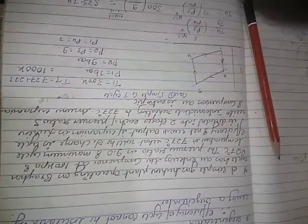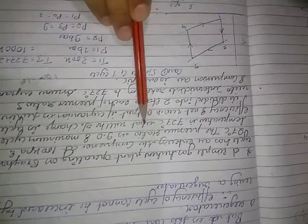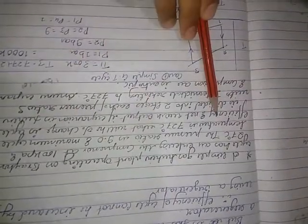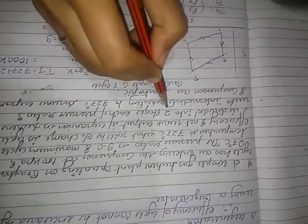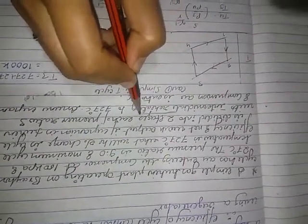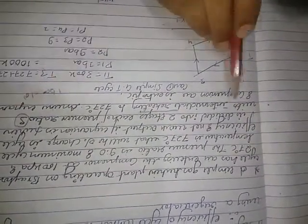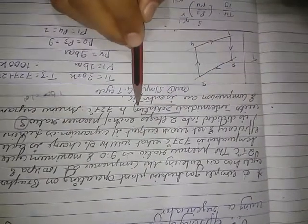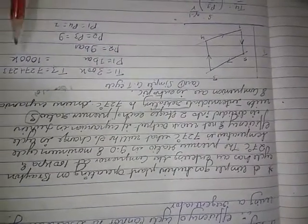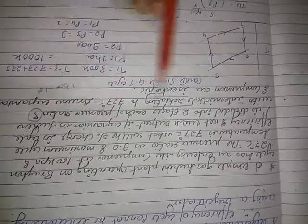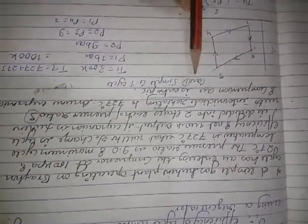There are two cases in this question. Case one is the simple gas turbine, and case two is with a reheater. In case two, expansion in the turbine is divided into two stages, each with a pressure ratio of 3, with intermediate reheating. The reheater temperature is 727°C = 1000 K, which is again T3. Assume expansion and compression are isentropic.